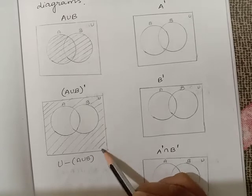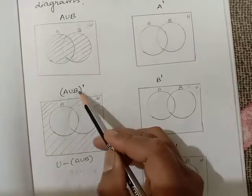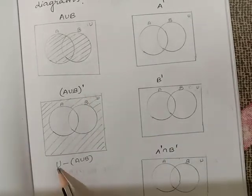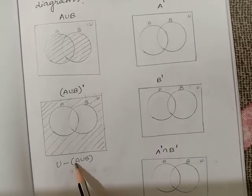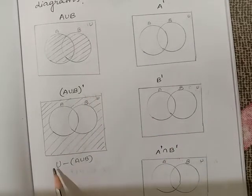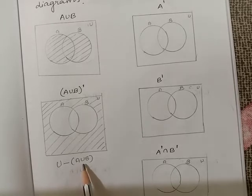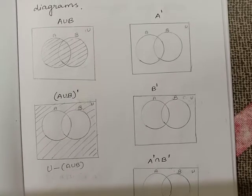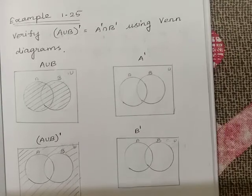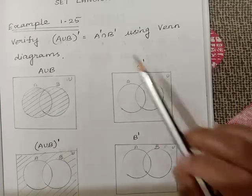The meaning of (A∪B)' is universal minus A union B. We need the portion of the universal set but we don't want the portion of A union B. Now we are coming to the right hand side: A' intersection B'.